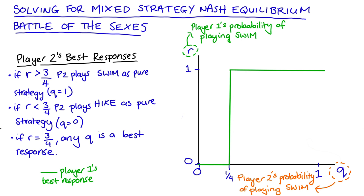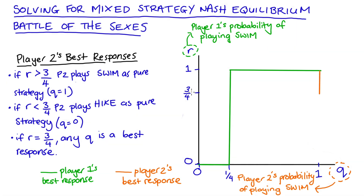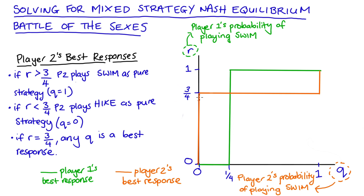Back to the diagram: I've left player one's best response line in green and will draw player two's best response line in orange. For r greater than three quarters, player two's best response is q = 1, so a vertical line at q = 1 over those values of r. For r less than three quarters, player two's best response is q = 0, so a line along the axis over those values. When r equals exactly three quarters, any q is a best response, so we draw a horizontal line across all q values at that level.